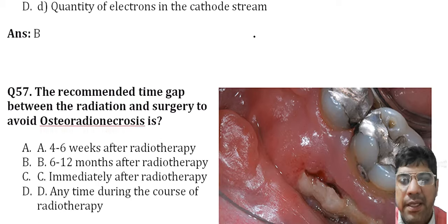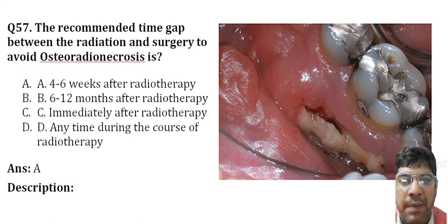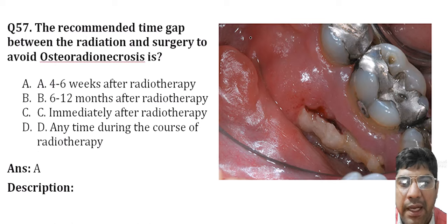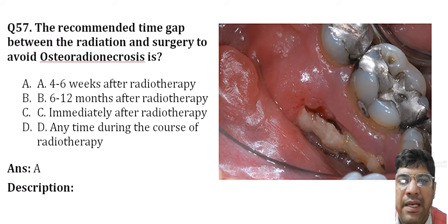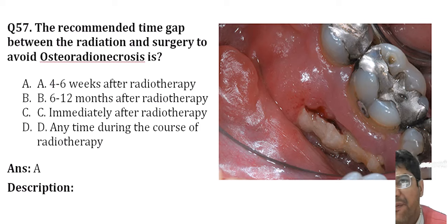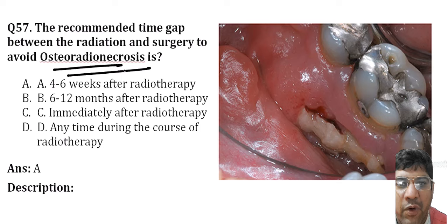The recommended time gap between radiation and surgery to avoid radionecrosis is four to six months. It is recommended to wait this period to reduce the risk of radionecrosis and allow for proper healing and recovery after radiation therapy. The risk of osteoradionecrosis is highest during 4 to 12 months after radiotherapy.